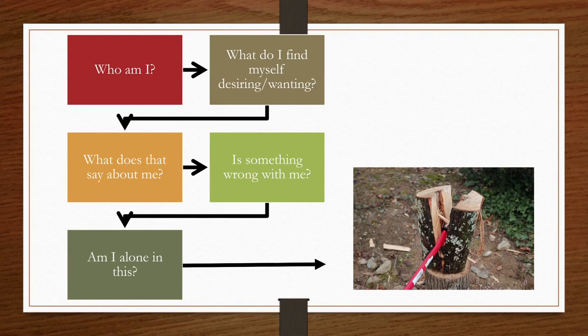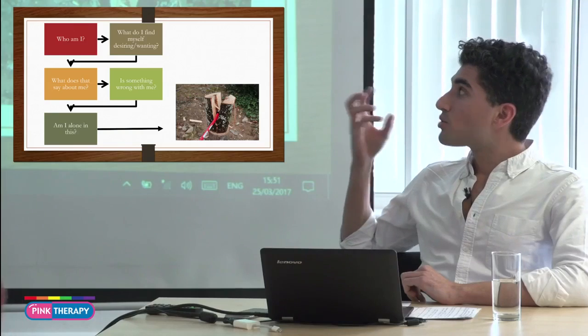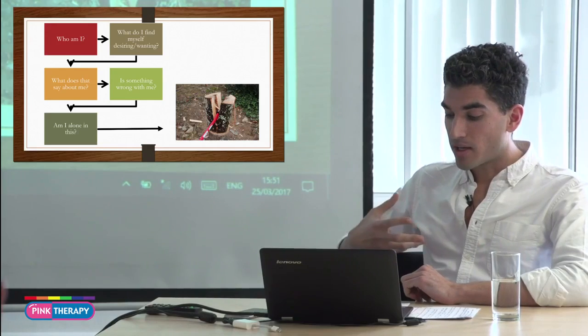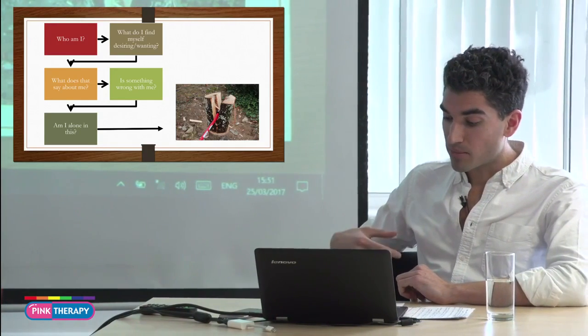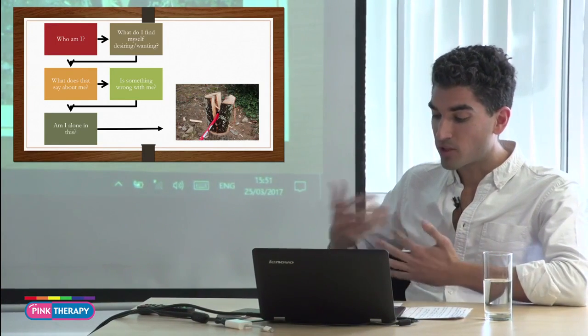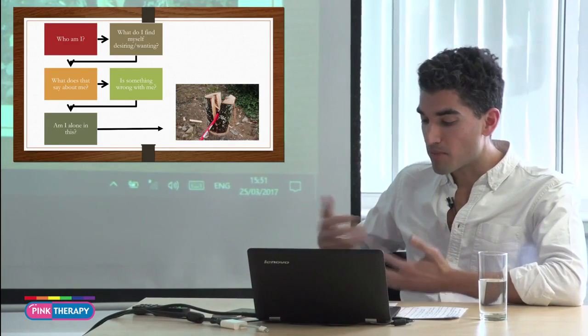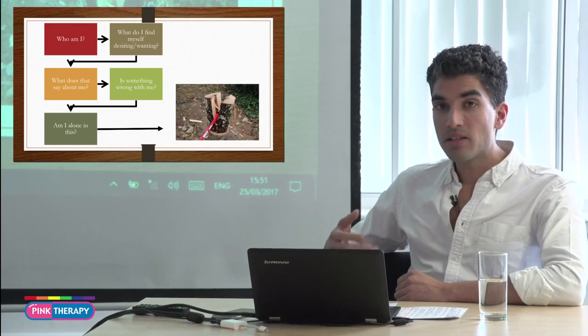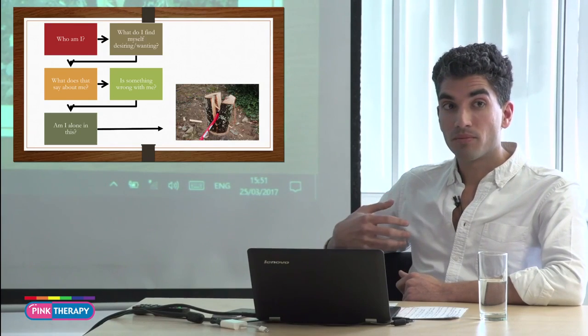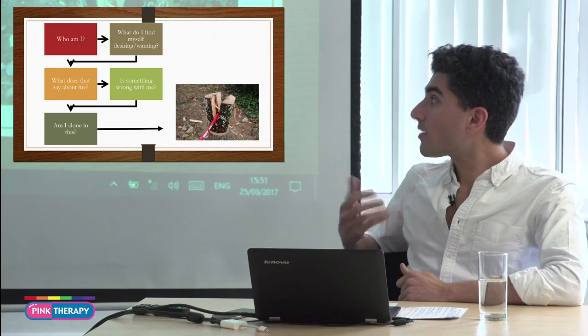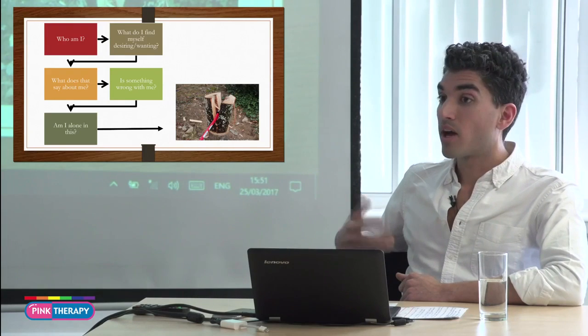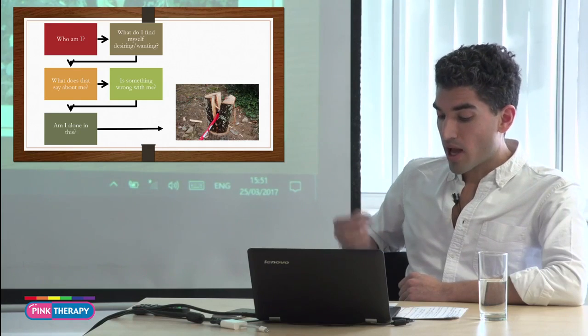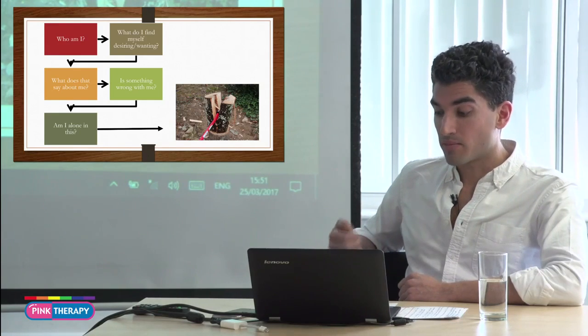I think the starting point with a lot of the challenges is this notion of identity. Who am I? Am I gay? Am I bi? Am I straight acting? Am I camp? Am I femme? Am I masc? Am I a dom? Am I sub? Am I a puppy, a bear, a twink, a jock, an otter? Are these identities something that I have chosen? And if so, why? Or have they been forced onto me by others? Is there something intolerable about not labeling or defining myself?